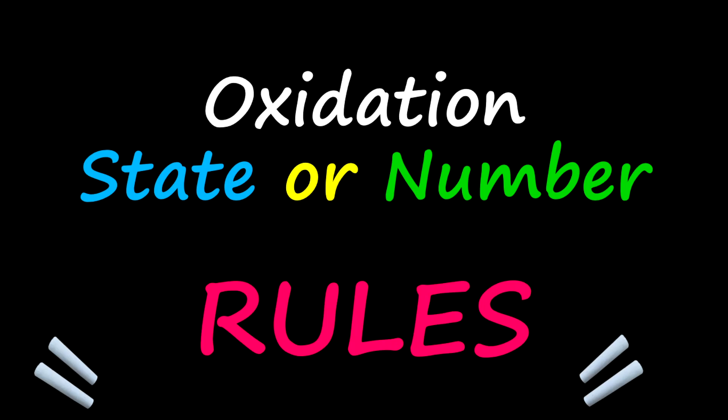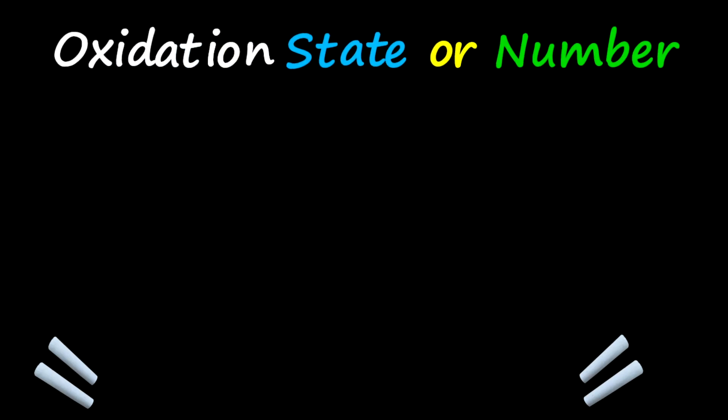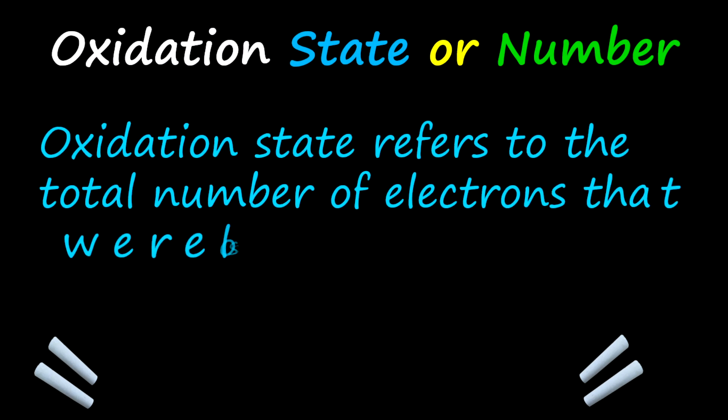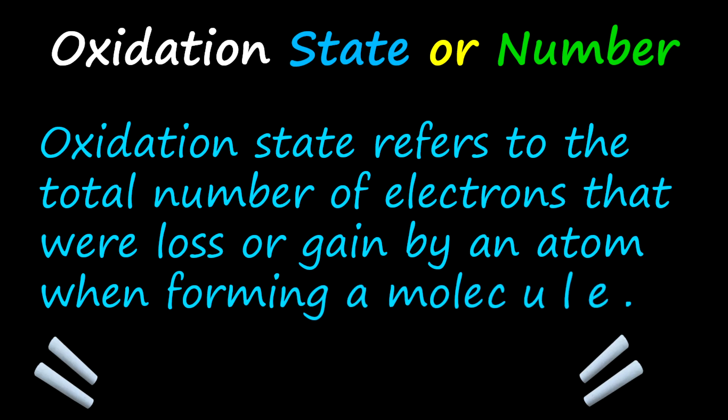Hello everybody, I hope you're all doing great. Now today we're going to look at the basic rules in assigning oxidation number or oxidation state to different atoms. Now first and foremost, let us look at what is oxidation state. Now oxidation state refers to the total number of electrons that were lost or gained by an atom when forming a molecule.